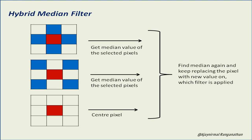We need three kinds of filters for the windows, which are applied on the pixels of the image we are working on. Then we get the median values of the selected pixels.